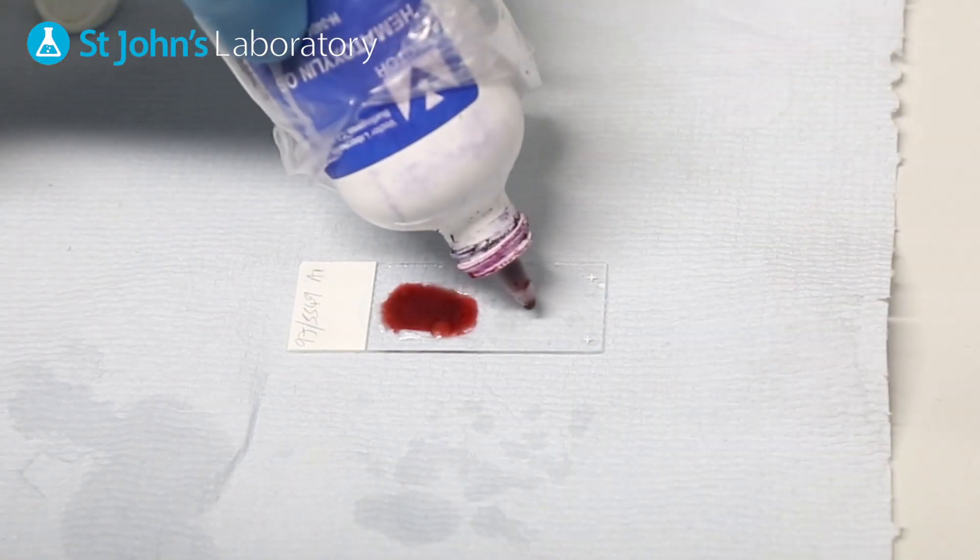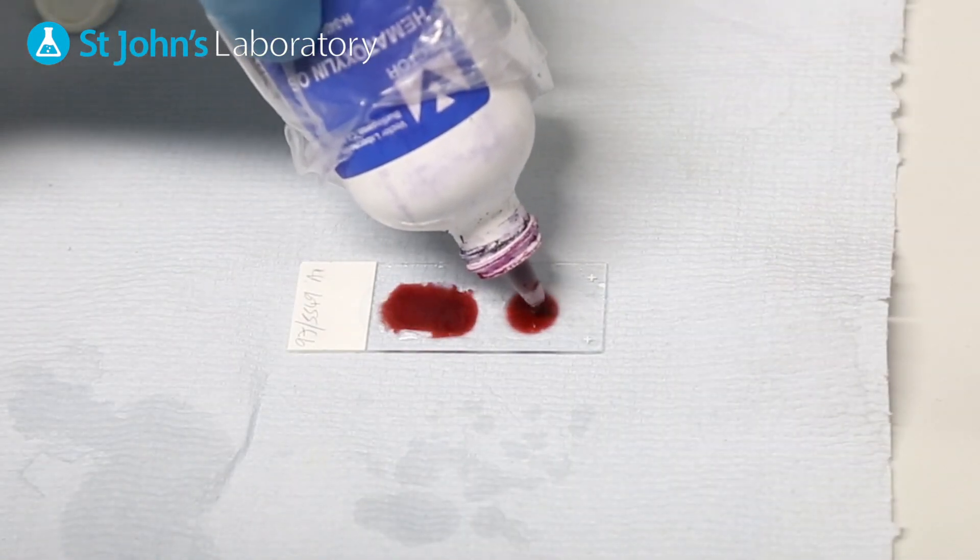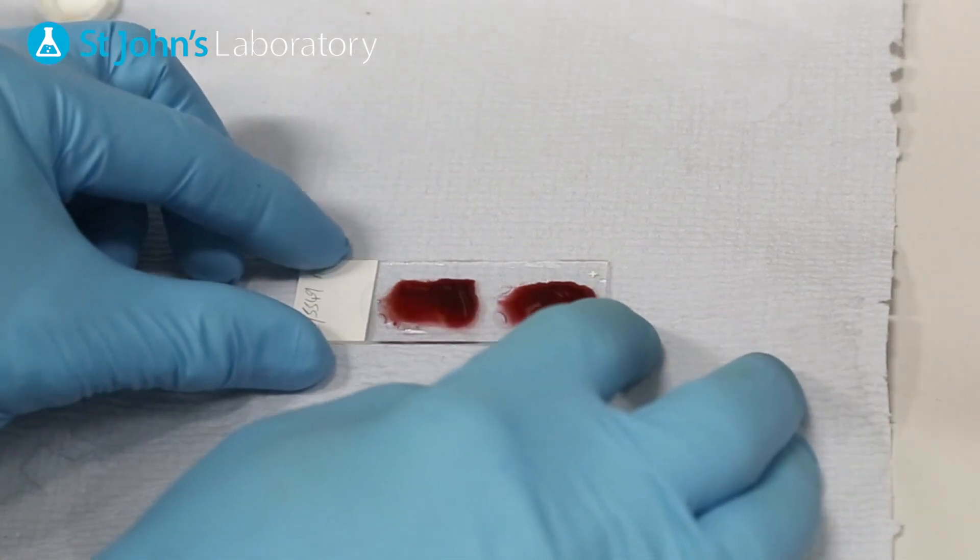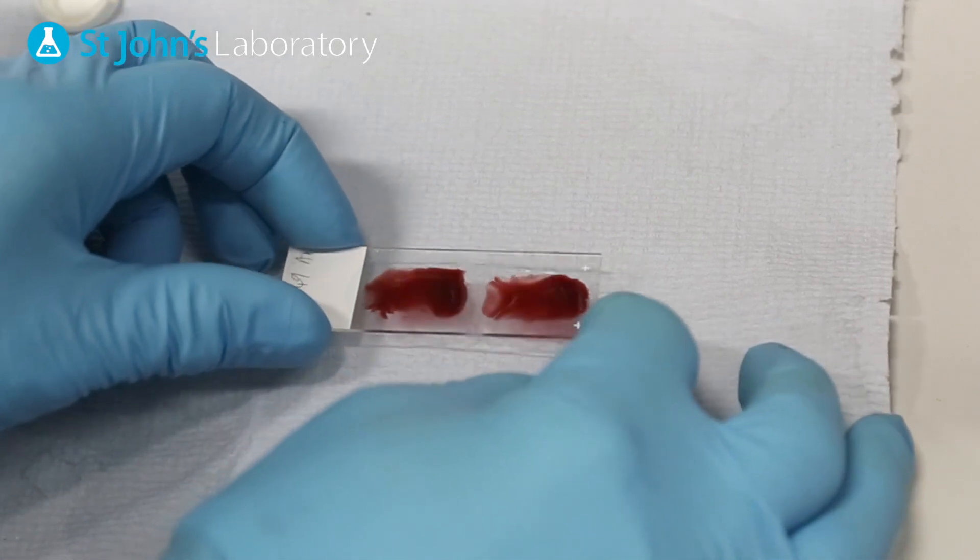Hematoxylin is a nuclear counter stain which binds to form dark blue or violet salts with acidic compounds such as DNA and RNA that hold negative charges. Apply this for 10 to 30 seconds before submerging in distilled water.